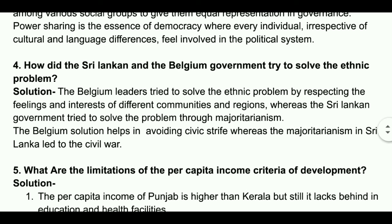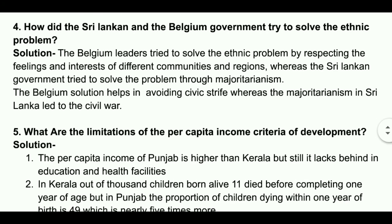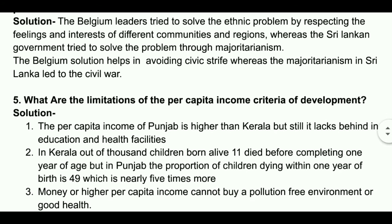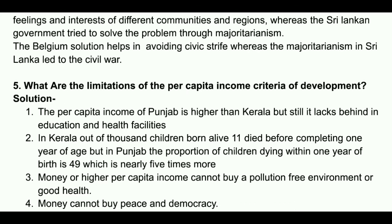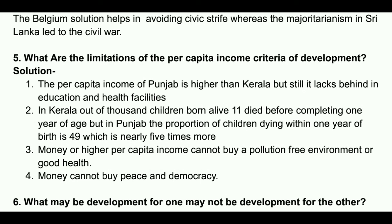What are the limitations of the per capita income criteria? Solution: The per capita income of Punjab is higher than Kerala, but still it lags behind in education and health facilities. In Kerala, out of 1000 children born alive, 11 died before completing one year of age, but in Punjab the proportion is 49, which is nearly five times more. Money or higher per capita income cannot buy a pollution-free environment or good health.